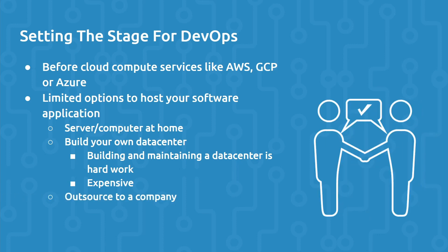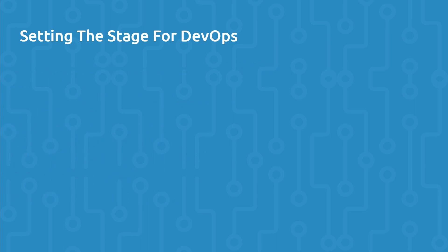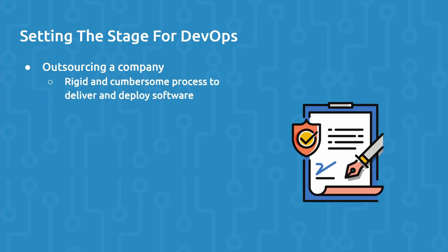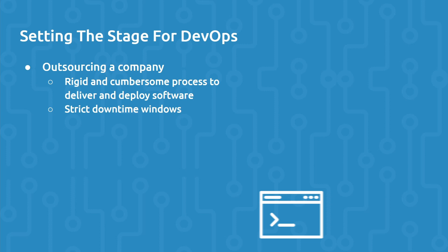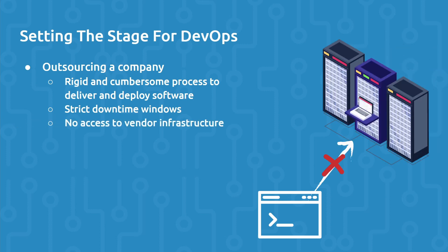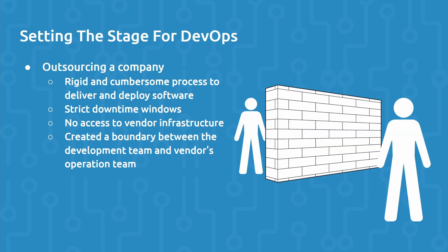The last option was to outsource to a company that could host your software application in their own data center, and this was an ideal option for small to medium-sized companies. However, the business relationship between the organization and the vendor hosting the organization's software included a rigid and cumbersome process on how to deliver software to the vendor and deploy on their infrastructure. The vendor had strict downtime and maintenance windows and charged expensive fees to deploy software outside of these windows, and the client often didn't have direct access to the vendor's infrastructure. This created a boundary between the client's development team and the vendor's operation team, and this boundary came to be known as the wall of confusion.